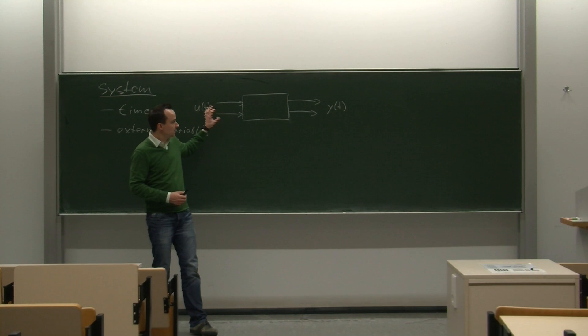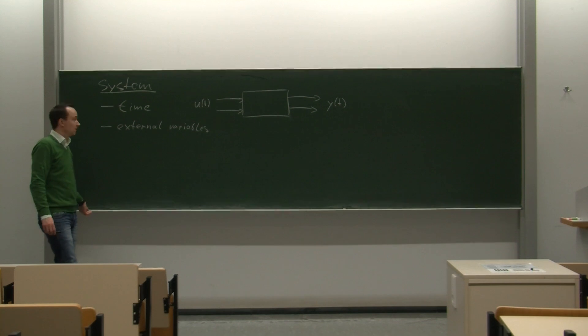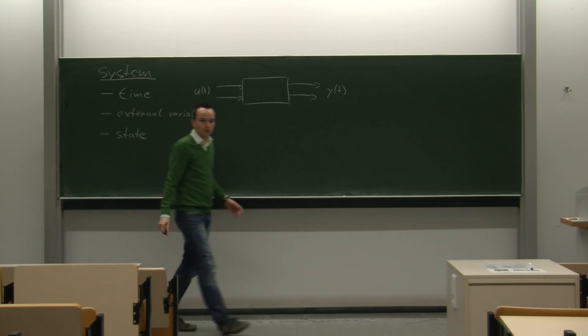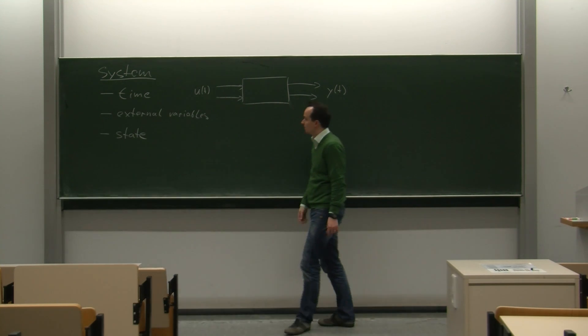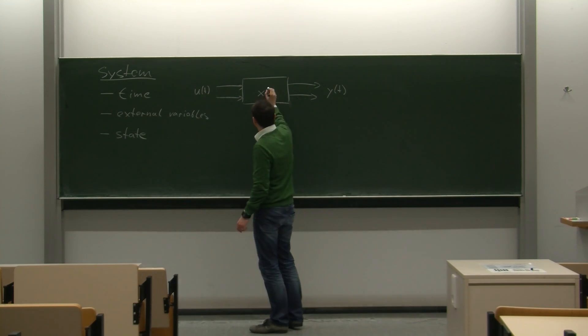Okay, so these are external variables, and we have a time dependence in there. And the third ingredient here is the state. You can think of it as the internal variables of the system, anything that goes on in the system. And we often call that x(t).